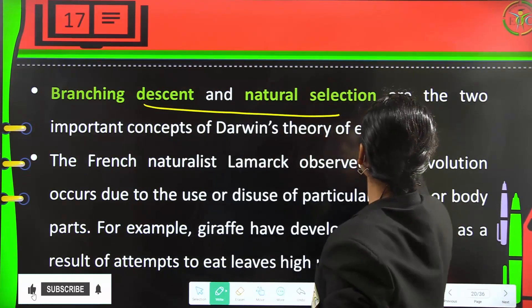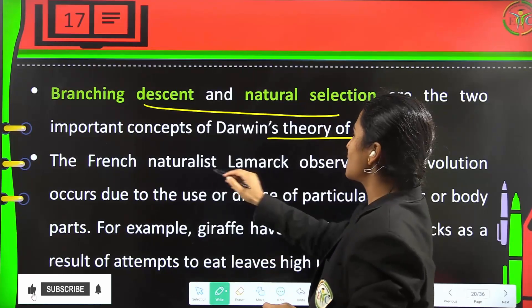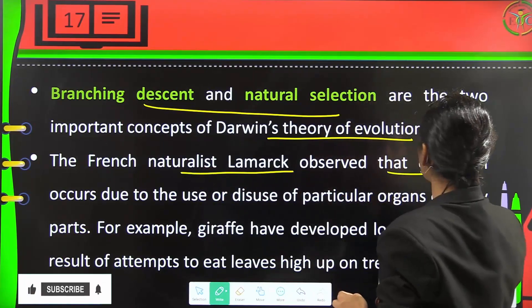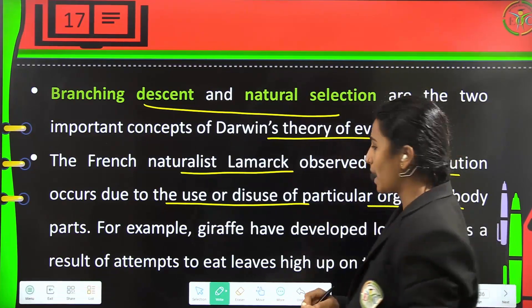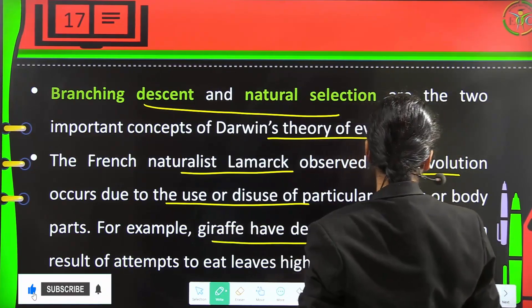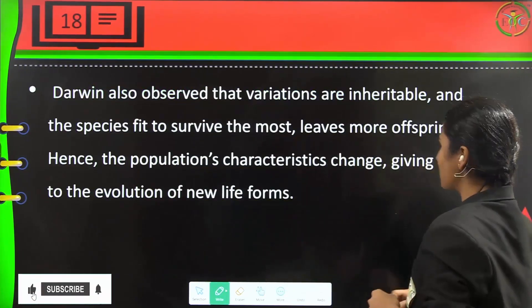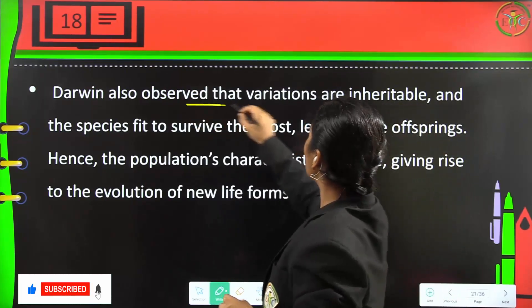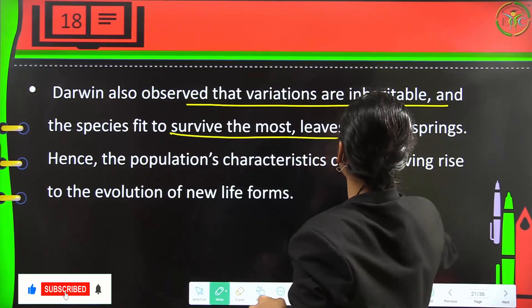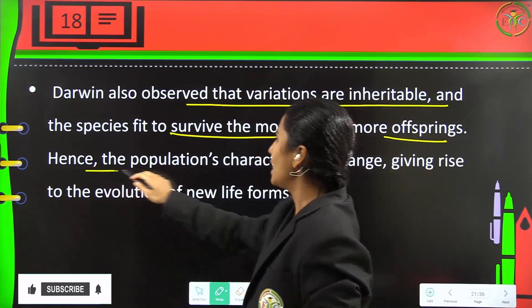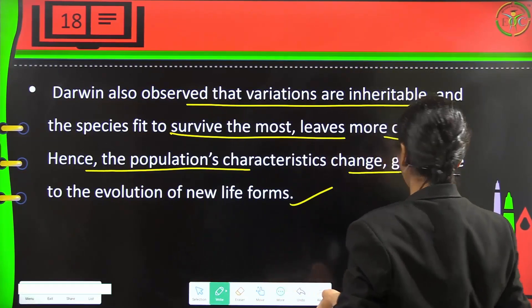Branching descent and natural selection are two important concepts of Darwin's theory. French naturalist Lamarck observed that evolution occurs due to the use and disuse of particular organs or body parts — for example, giraffes developed long necks as a result of attempts to eat leaves high in trees. Darwin also observed that variations are inheritable; the species most fit to survive leave more offspring, changing population characteristics and giving rise to new life forms.